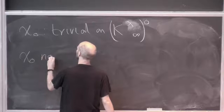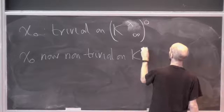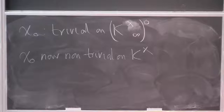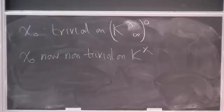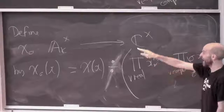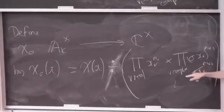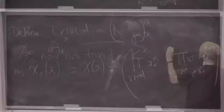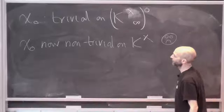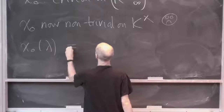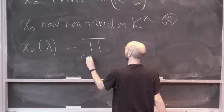But chi_0 is now non-trivial on k* diagonally embedded. The original chi was trivial on the diagonally embedded k*, but complicated at infinity. After dividing by what was happening at infinity, if I've got an element lambda in k* embedded diagonally, at infinity these are lambdas and conjugates of lambda raised to some random powers. So chi_0 of lambda is just some product over embeddings sigma: k to C of sigma(lambda)^{n_sigma}, where these n_sigmas are integers — for example, for the norm character all n_sigmas equal 1, giving the norm of lambda.